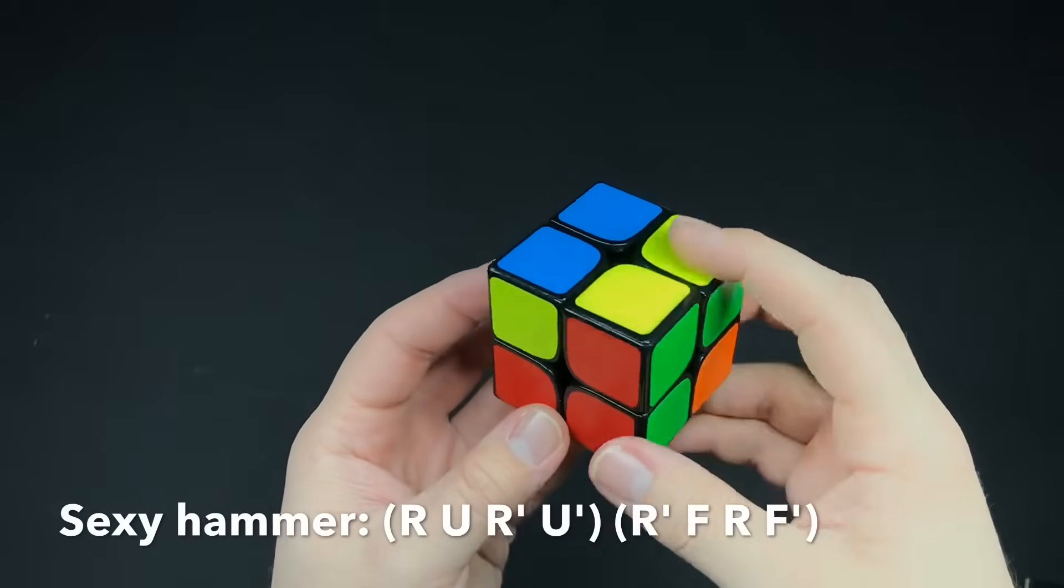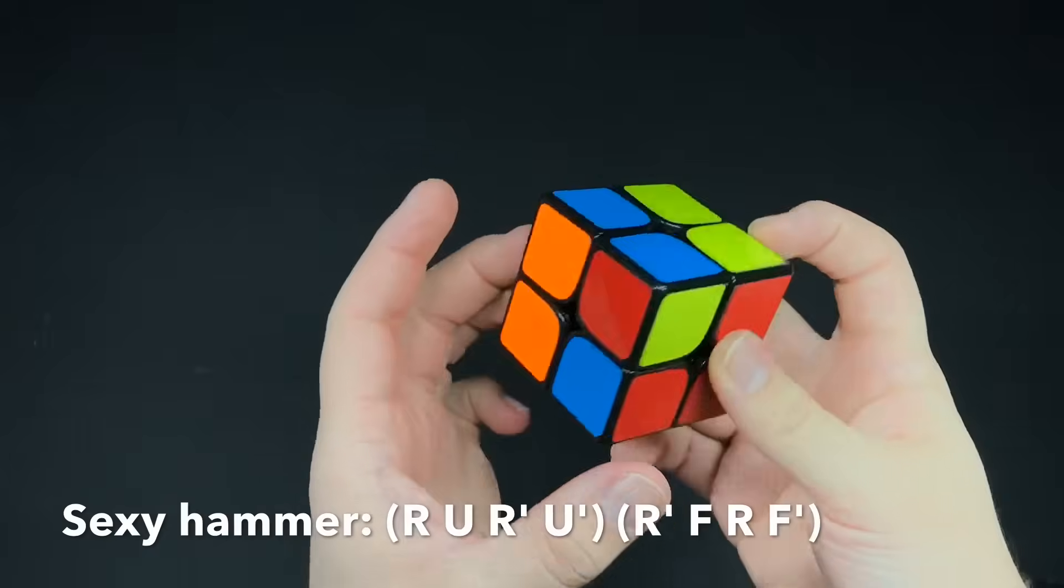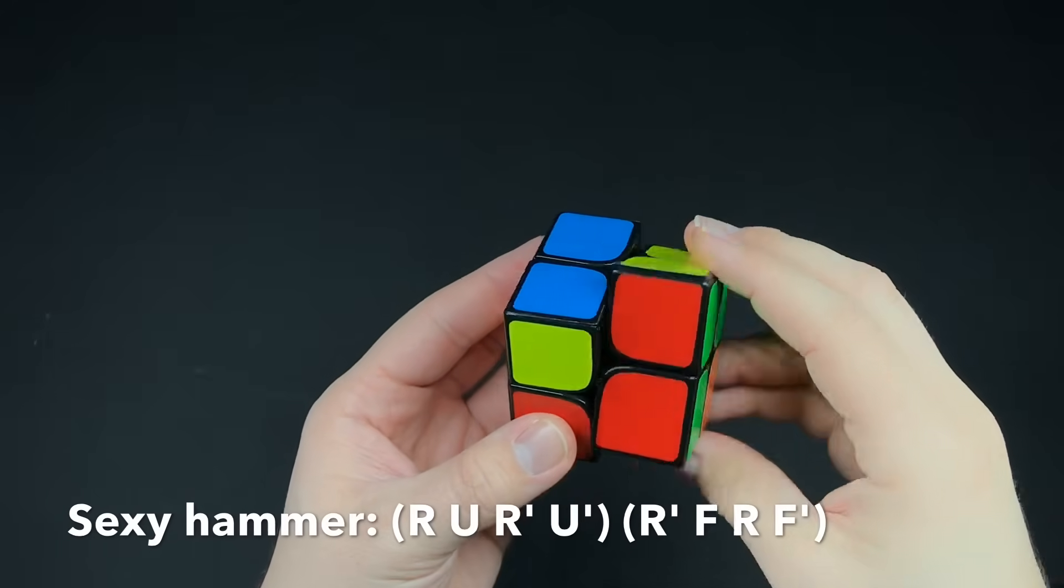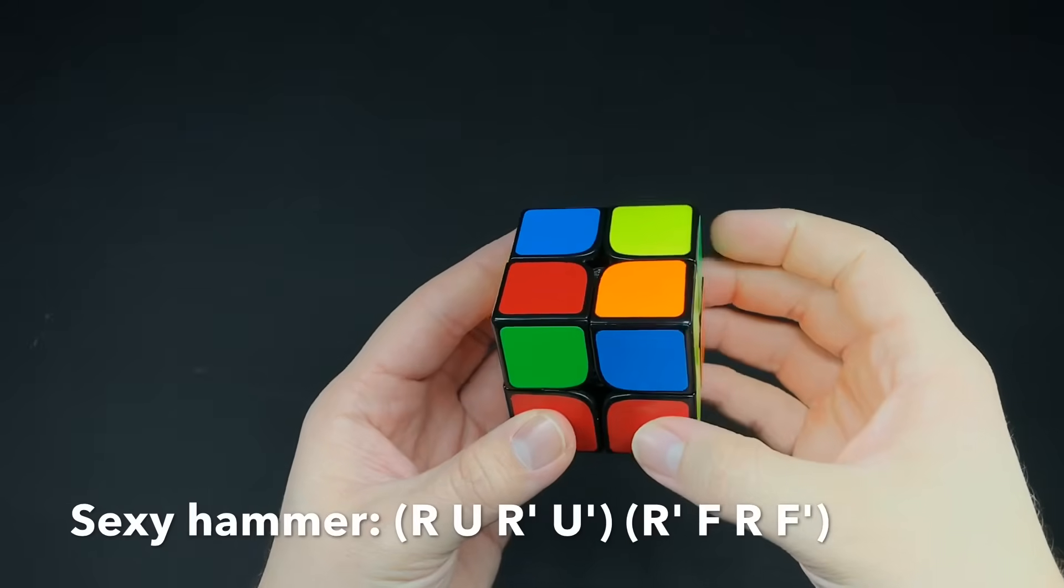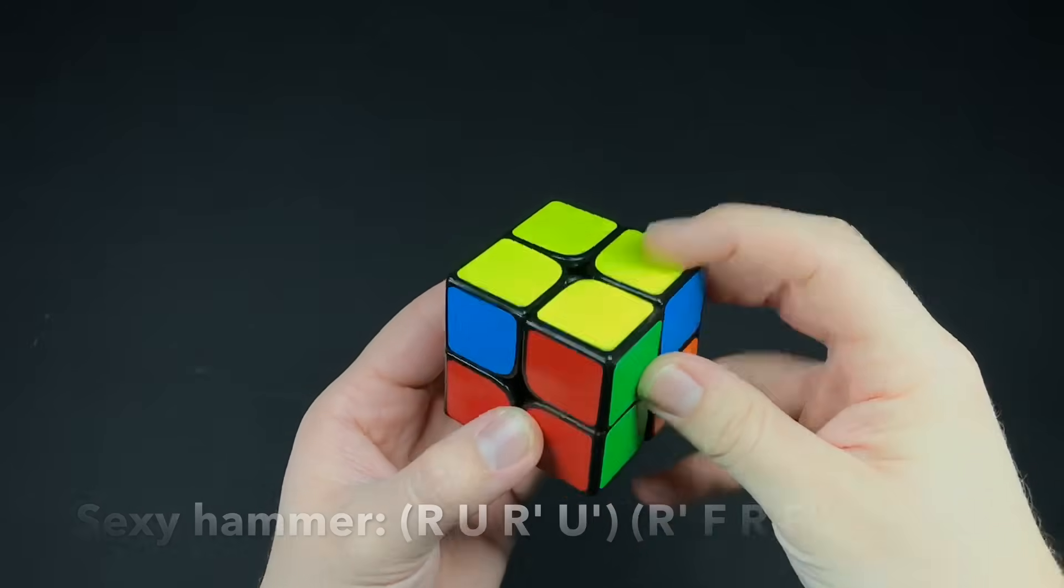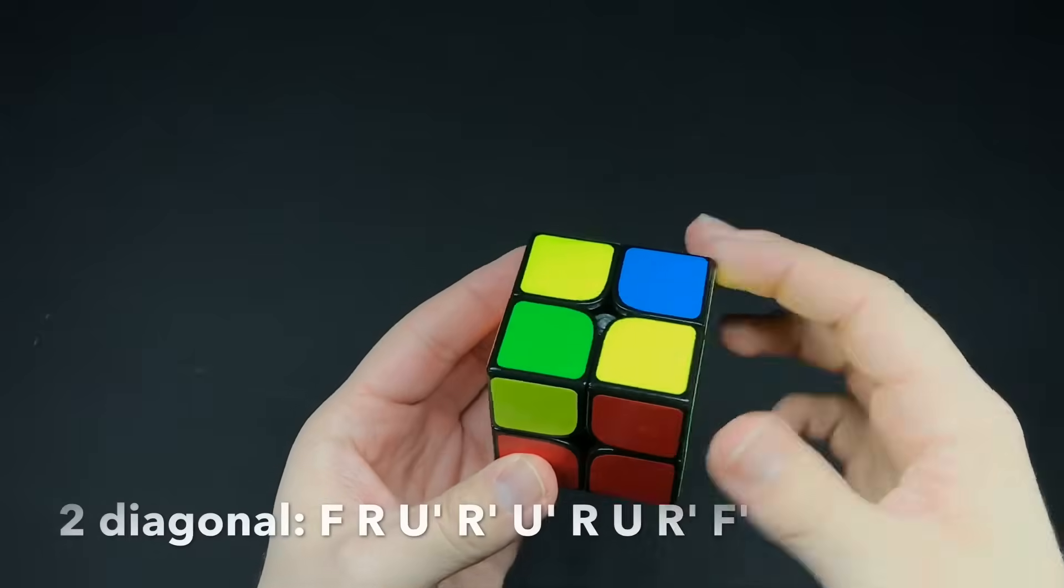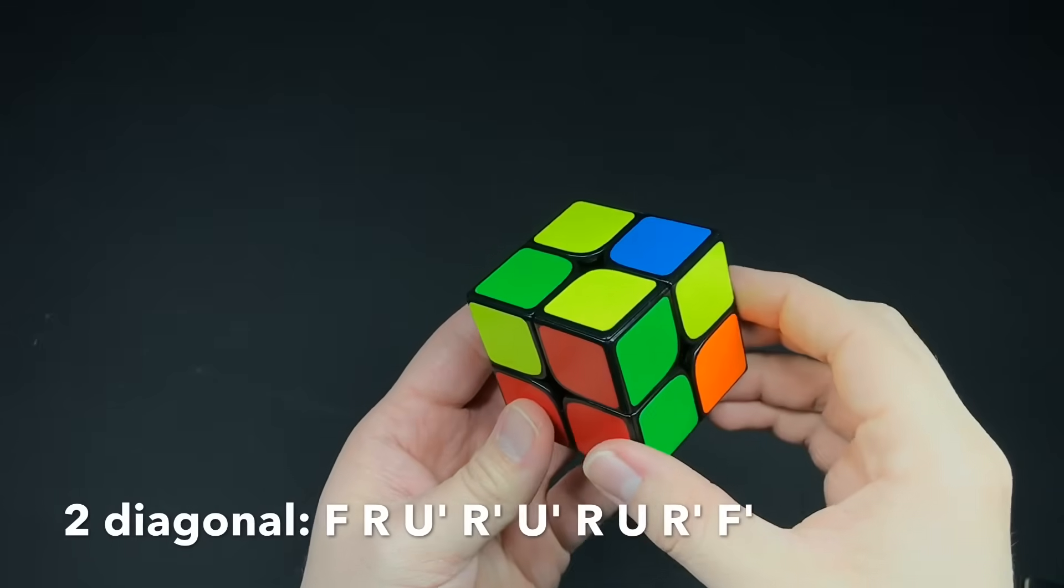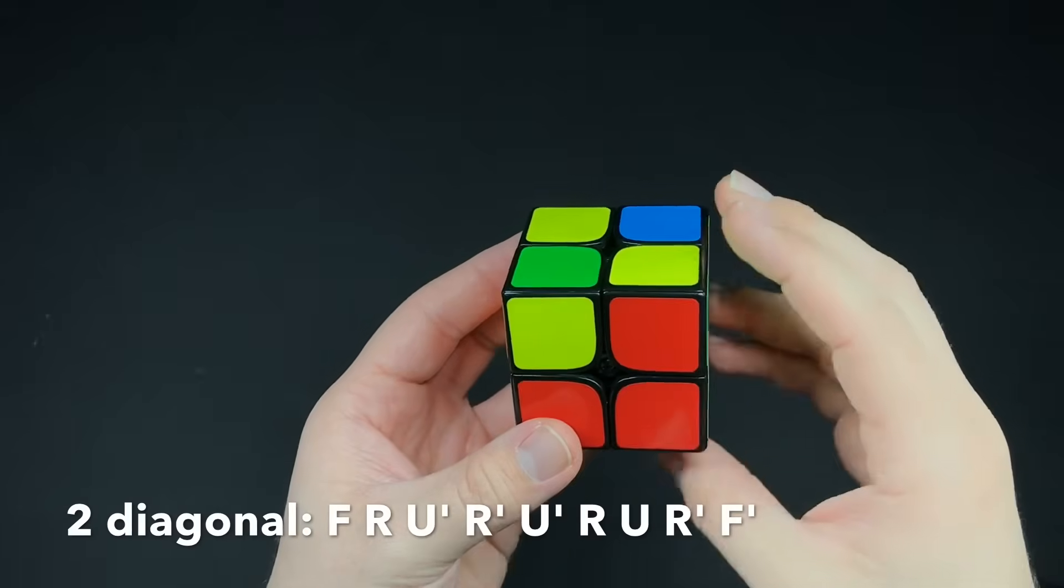If you have this case, two on top and then two on the sides on opposite sides, you do this. In this case, there's two diagonal on top and then the two are positioned like this. Do this algorithm.